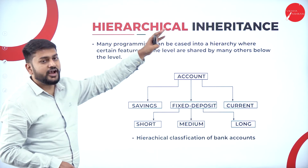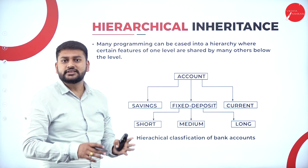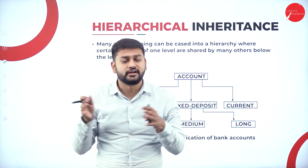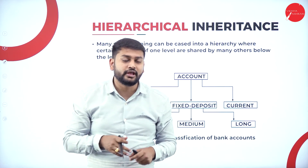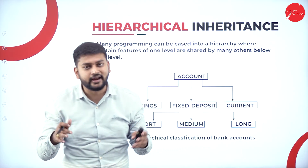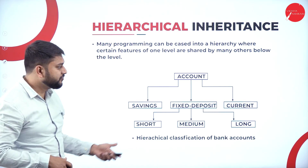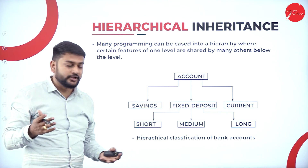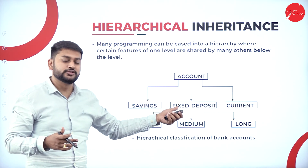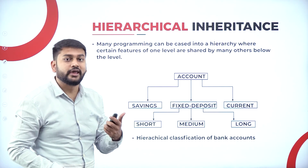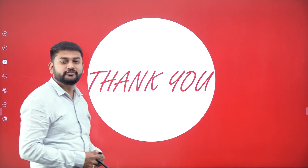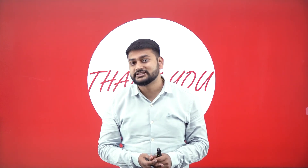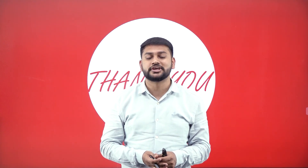Moving forward to hierarchical inheritance. You have one base class and multiple derived classes or subclasses - such a type of inheritance is called hierarchical inheritance. For example, Accounts is a base class and Savings, Fixed Deposit, and Current are subclasses. With this I've come to the end of this session. I'll be discussing overriding methods, abstract, and sealed in the next class. Till then, take care. Bye bye, happy learning.